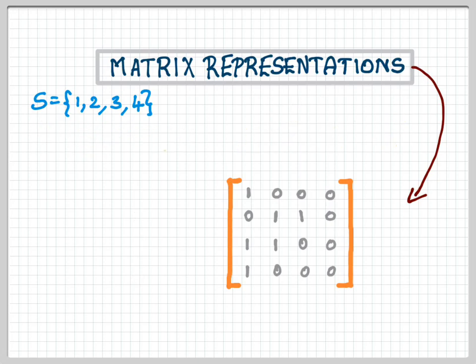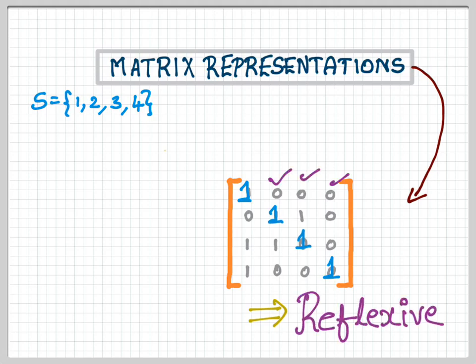When do you call a relation reflexive? If the diagonal has all ones. Whatever the relation, you can put any values for the other entries, but all you need to observe is that the diagonal should all be one. Then you call it reflexive.